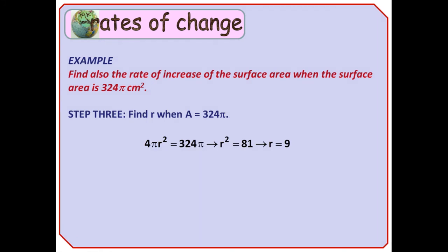Step 3, we need to know what r is when A is 324 pi, so we can put 4 pi r squared equals 324 pi. The 4 and the pi cancel out, leaving us with r squared is 81, for which we obviously realize that r is 9.